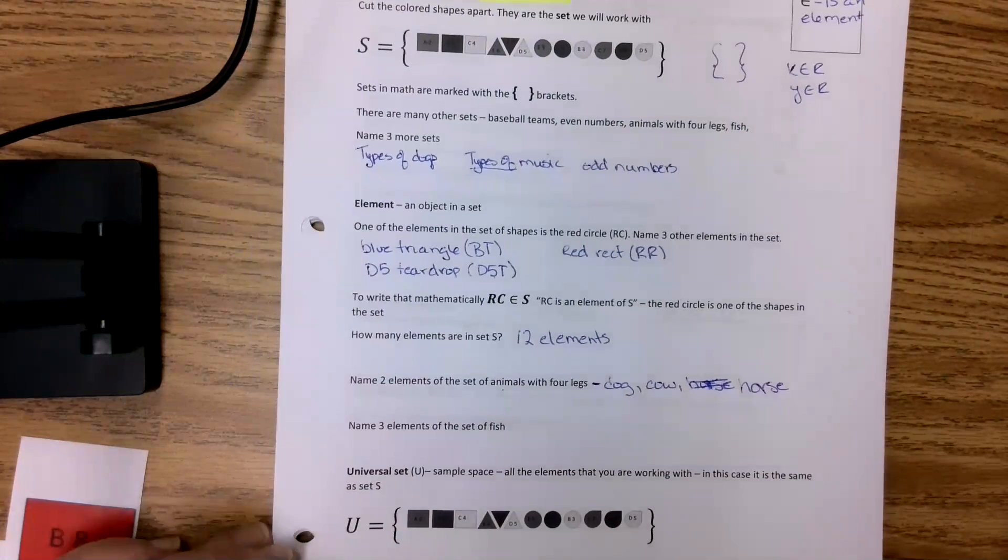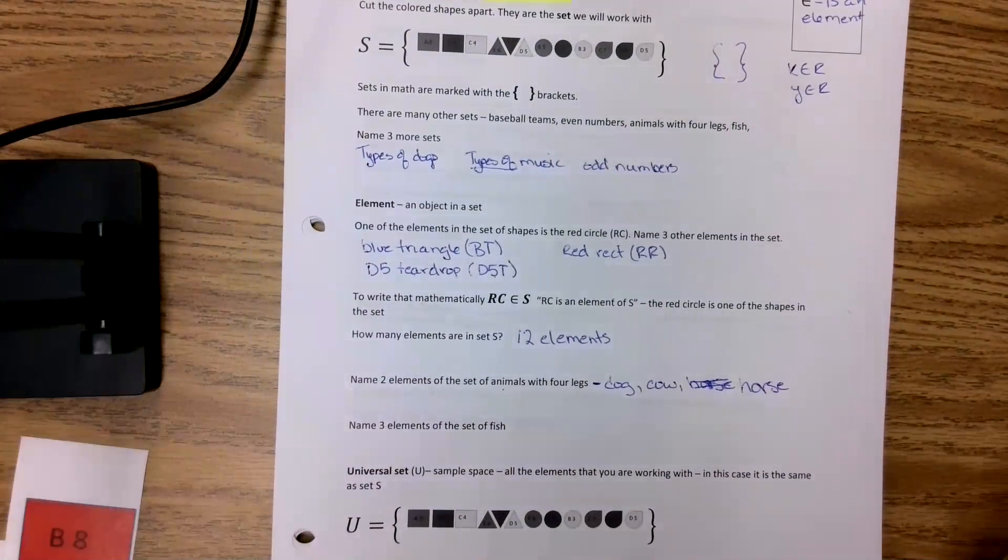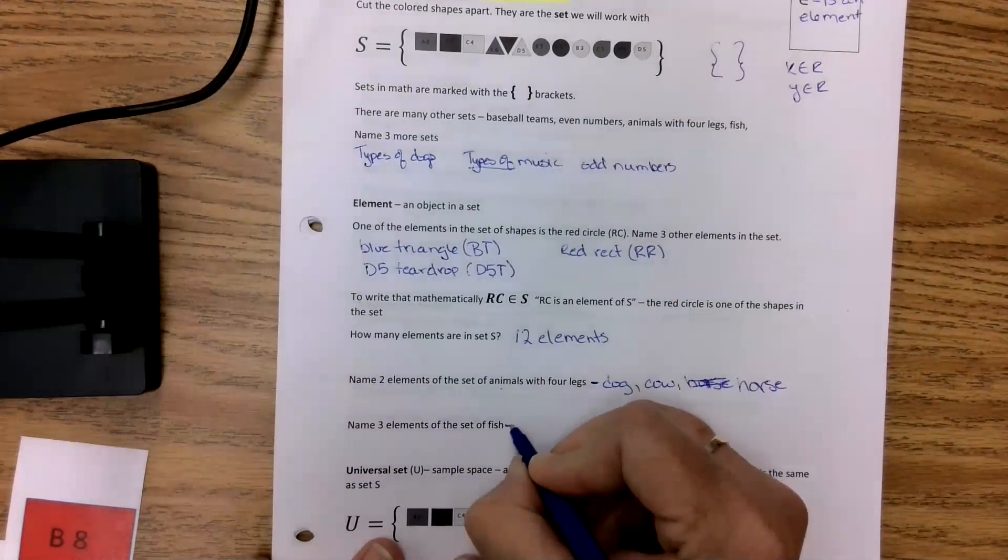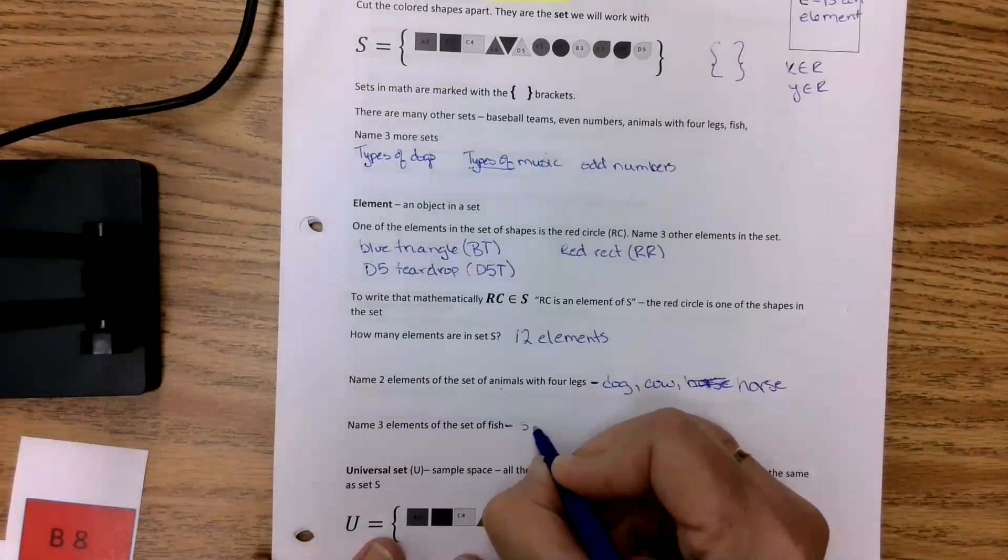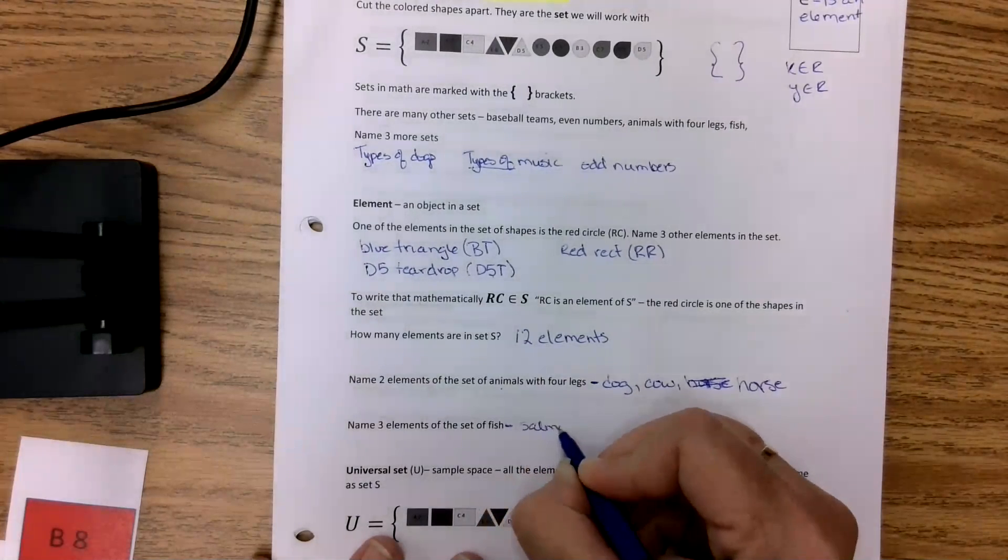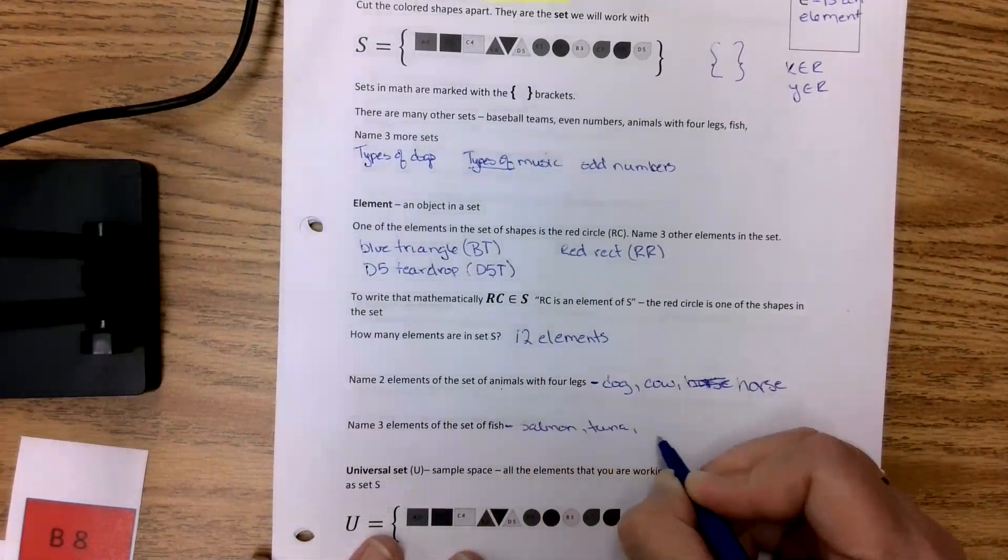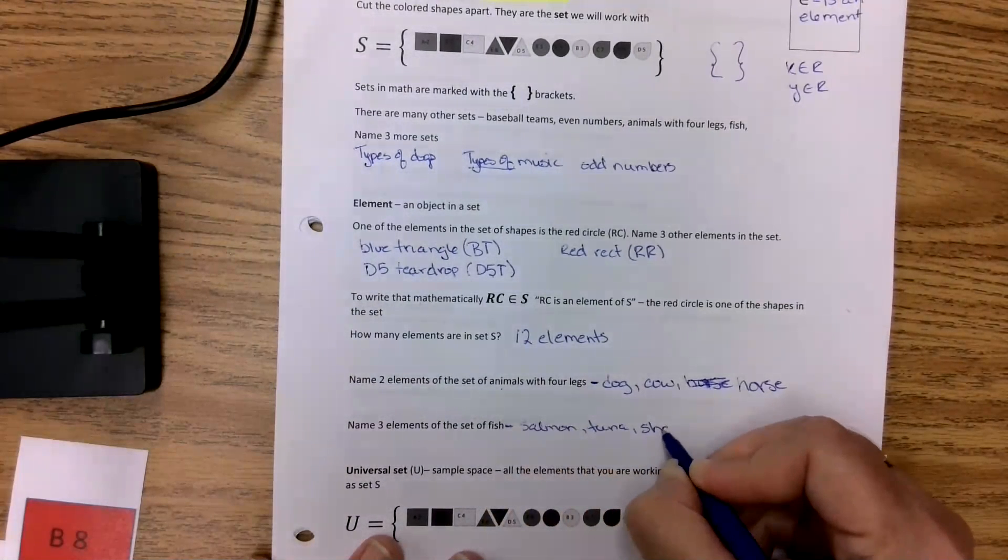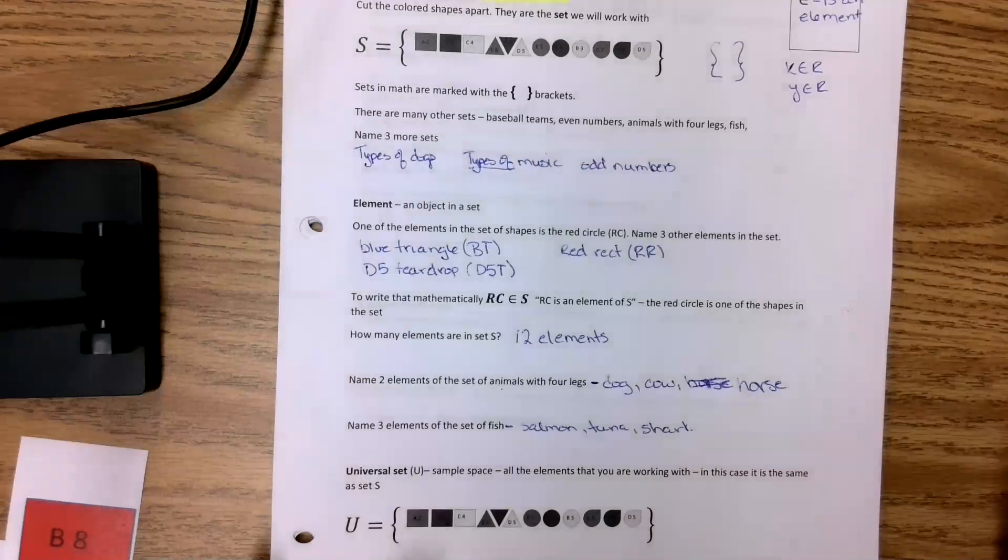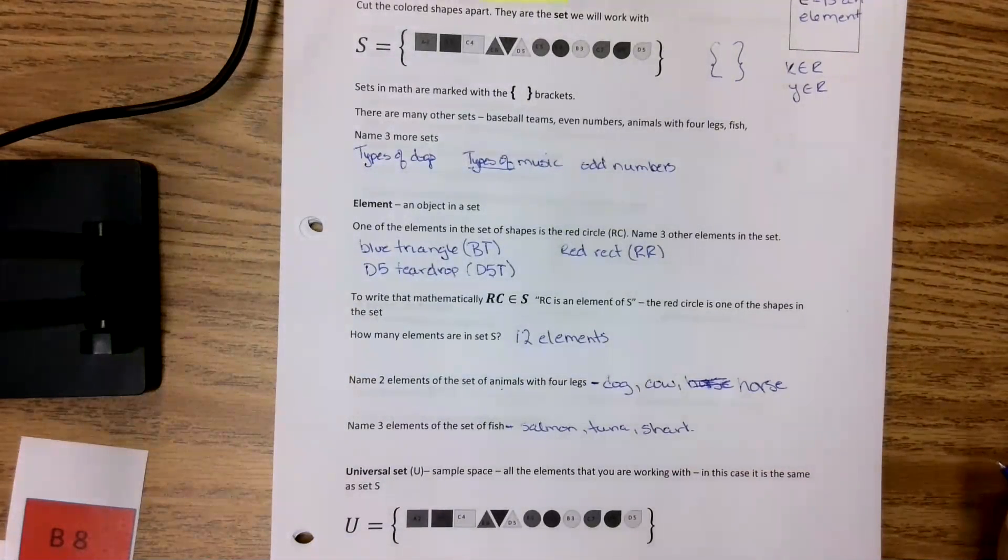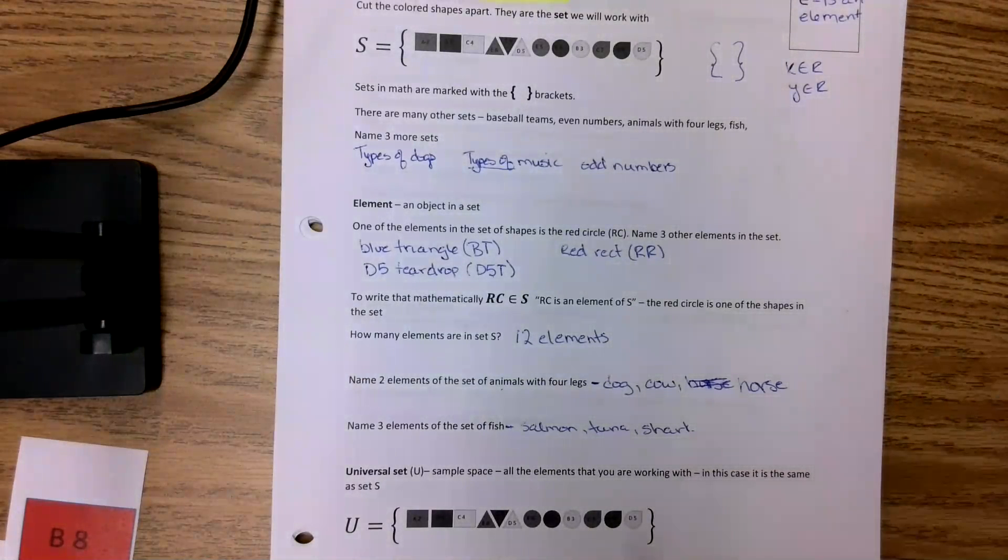All right. Name three elements of the set of fish. Name three fish. We got this. It's not any specific one. So salmon, pike, pickerel, jack, goldfish, guppy, Sunny's fighting fish. It's all good.